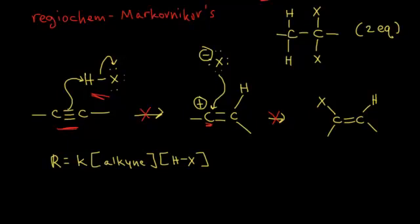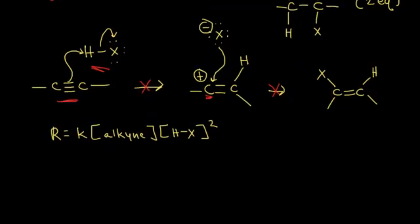The experimental rate law turns out to be second order with respect to your hydrogen halide and third order overall. It's actually dependent upon two molecules of your hydrogen halide and one molecule of your alkyne. Since it's third order overall, we need to come up with a different mechanism.